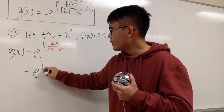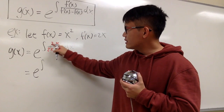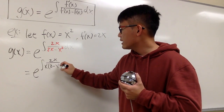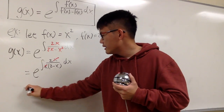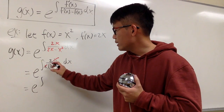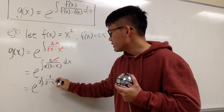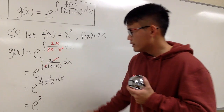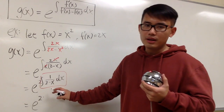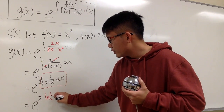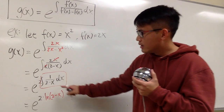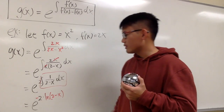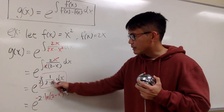To work this out, I can factor x out of the denominator: 2x over x(2 minus x), so the x's cancel. This gives e to the integral of 2 over (2 minus x) dx, which is e to 2 times the integral of 1 over (2 minus x) dx. The integral of 1 over (2 minus x) is ln|2 minus x|, but the derivative of (2 minus x) is negative 1, so we get a negative sign — giving us negative ln|2 minus x|.